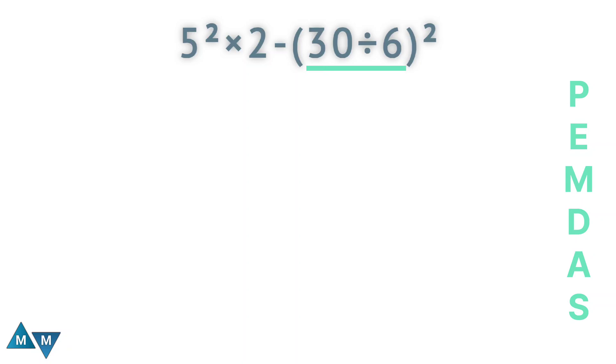So the first thing we're going to do is parentheses. So we're going to simplify everything in the parentheses first. So inside the parentheses, we have a division sign. So 30 divided by 6 will be our first move, which is equals to 5.